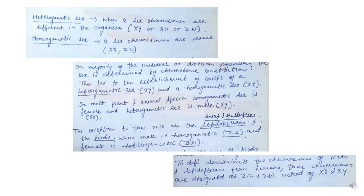In heteromorphic sex, the two sex chromosomes are different in the organism and these sex chromosomes can be XY, XO (meaning X and no other sex chromosome), or ZW. In homogametic sex, where the two sex chromosomes are the same, they can be XX or ZZ.